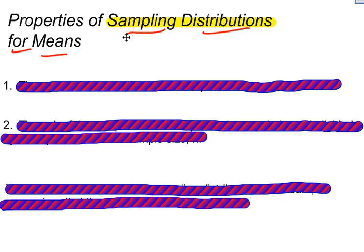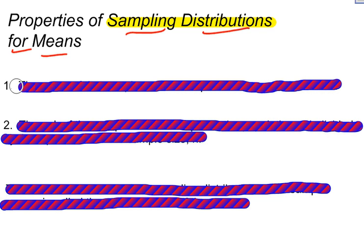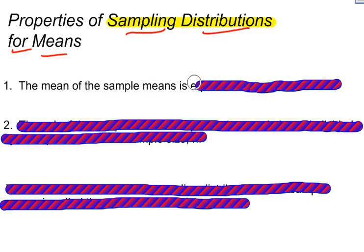Even though the population was bimodal or trimodal and not bell-shaped or symmetric — it's all over the place — the distribution of the sample means is bell-shaped and symmetric. So that leads me to the properties. The properties for a sampling distribution for means: when you take a bunch of different samples, find the average of those samples, and put the averages or means into a distribution, two things happen.